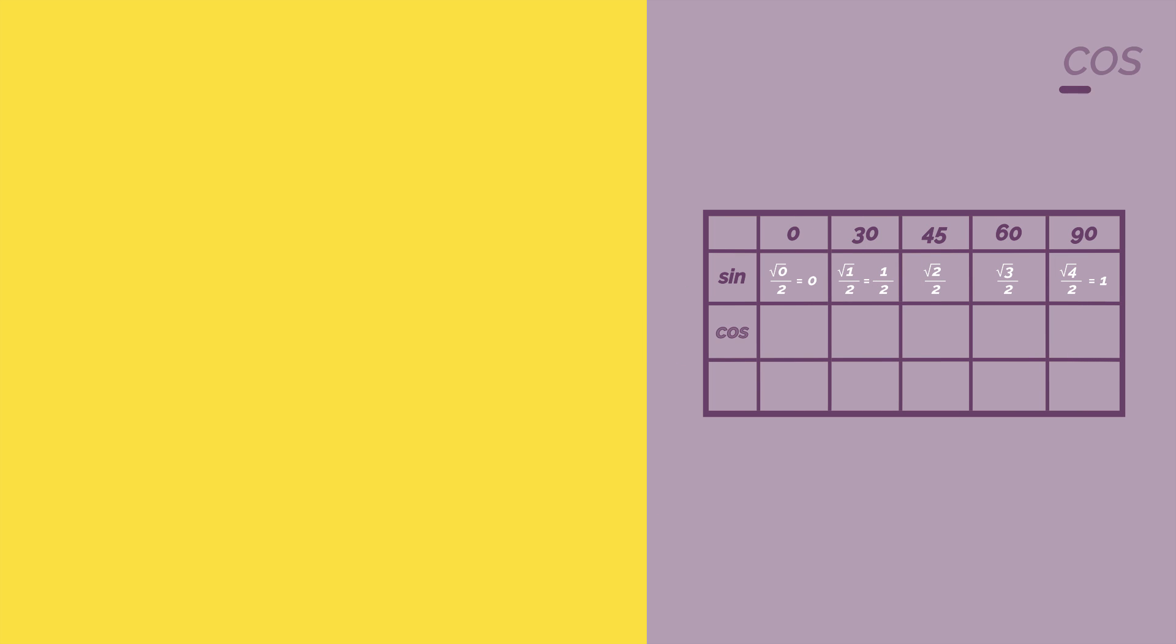So now let's look at cos. We do the exact same thing of dividing by two and square rooting on top. But this time, we start from four and work down. So cos of zero degrees is root four divided by two.